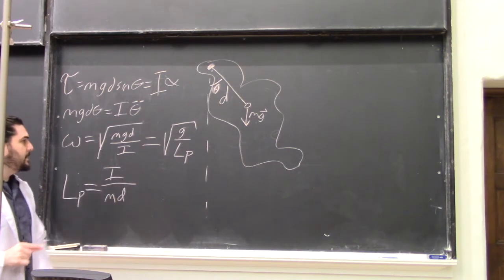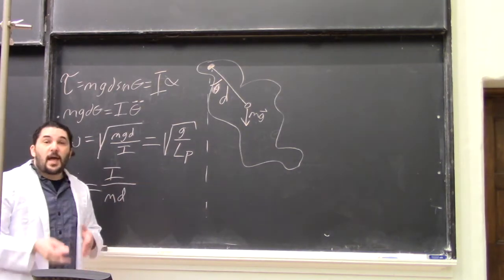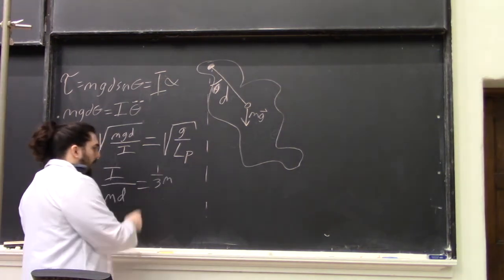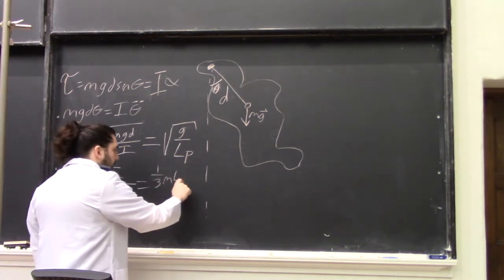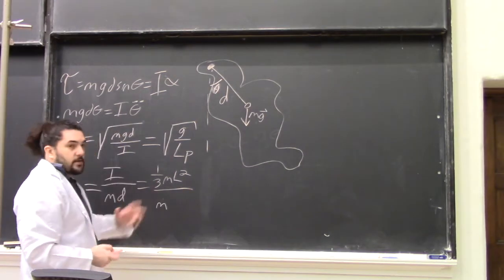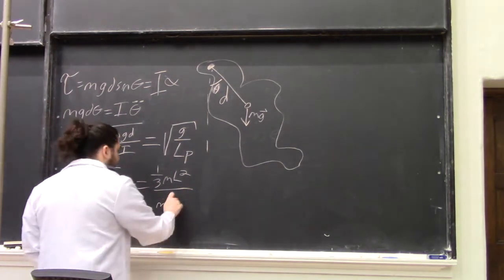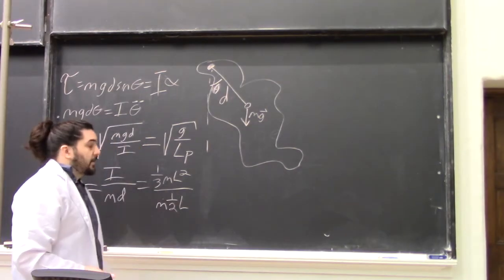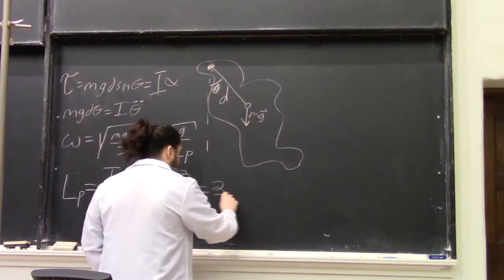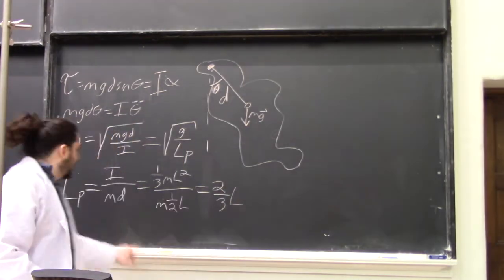So if we're looking at a uniform rod, I is one third ML squared, D is one half L. The center of mass is at the halfway point of the rod. So the equivalent simple pendulum has two thirds the length of the rod.